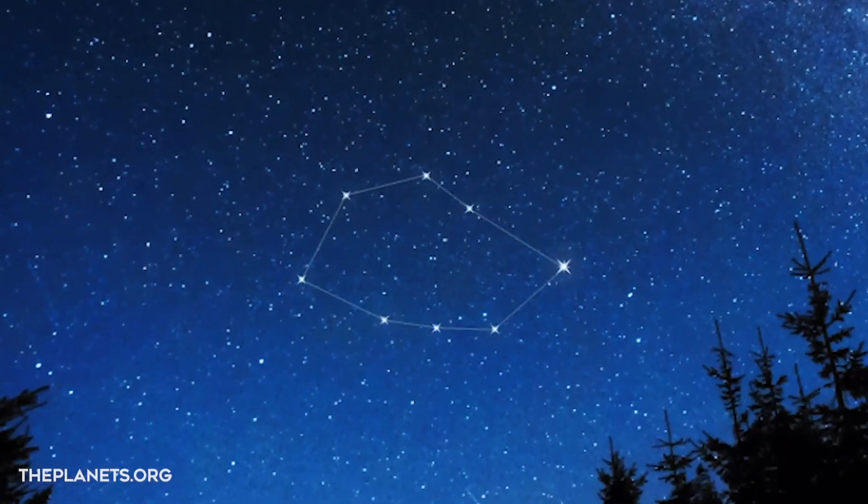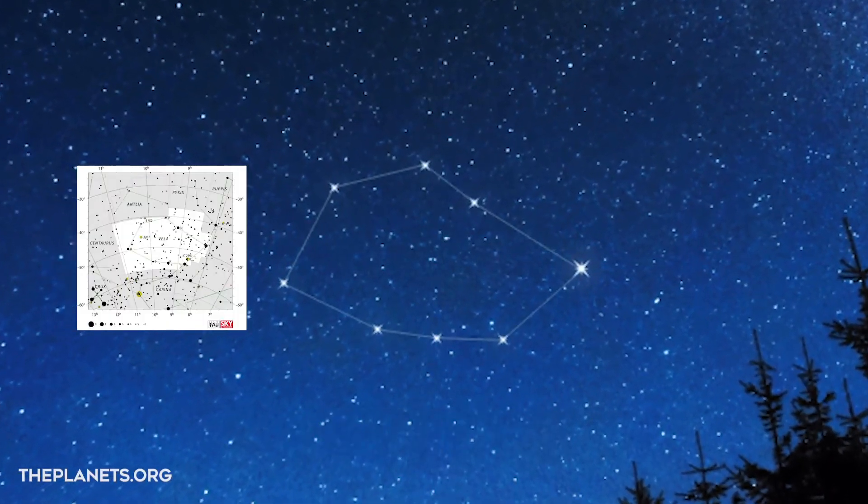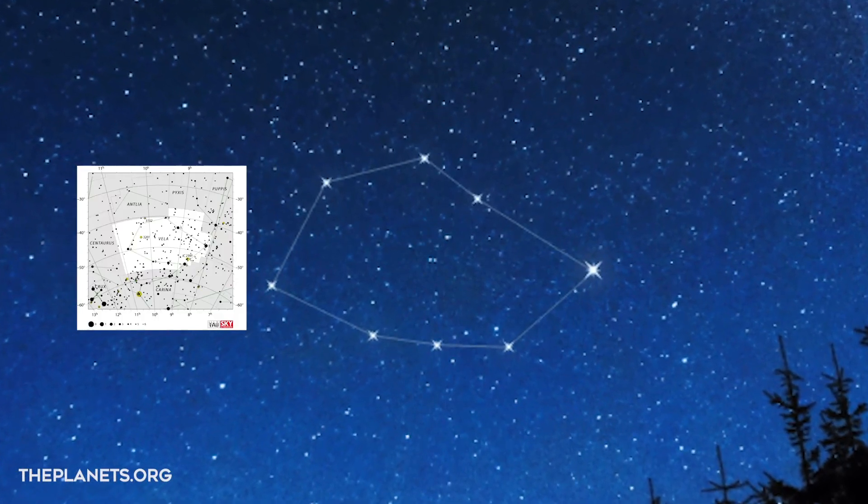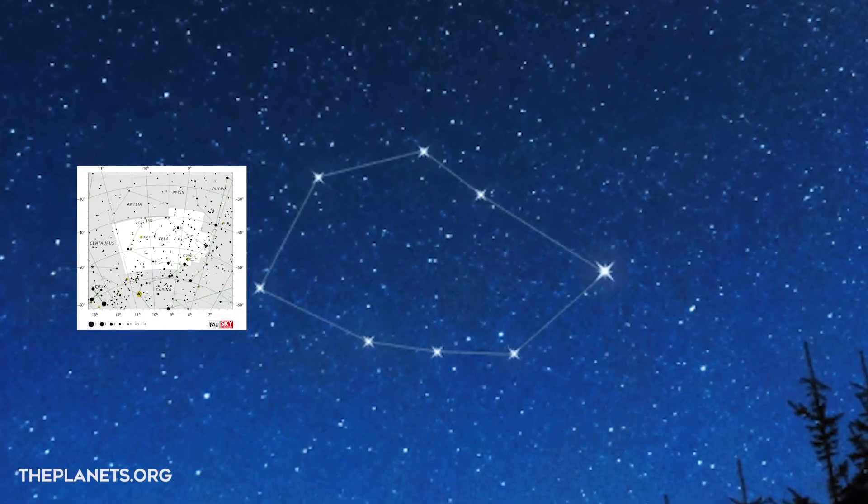It is in the southern constellation of Vela, the Sails. The image is about the same size in the night sky as nine full moons.